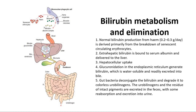The gut bacteria deconjugate the bilirubin and degrade it to colorless urobilinogens. The urobilinogens and the residue of intact pigments are excreted in the feces, with some reabsorption and excretion into urine.